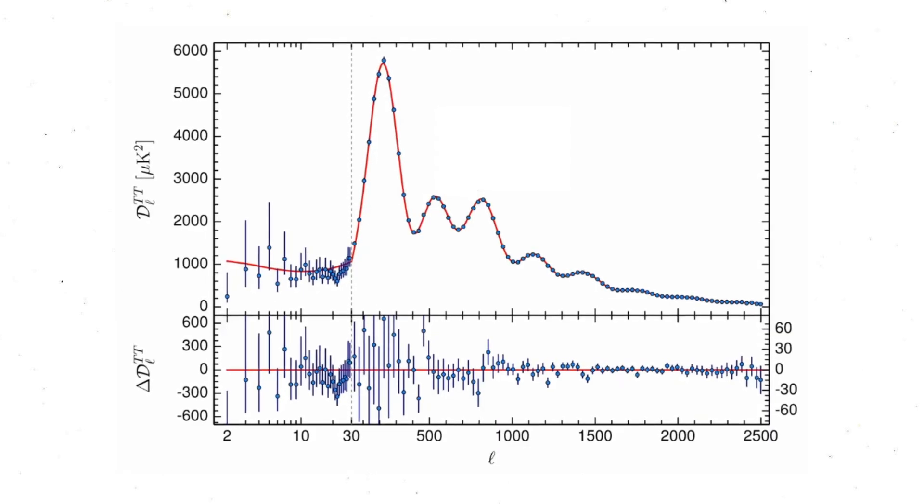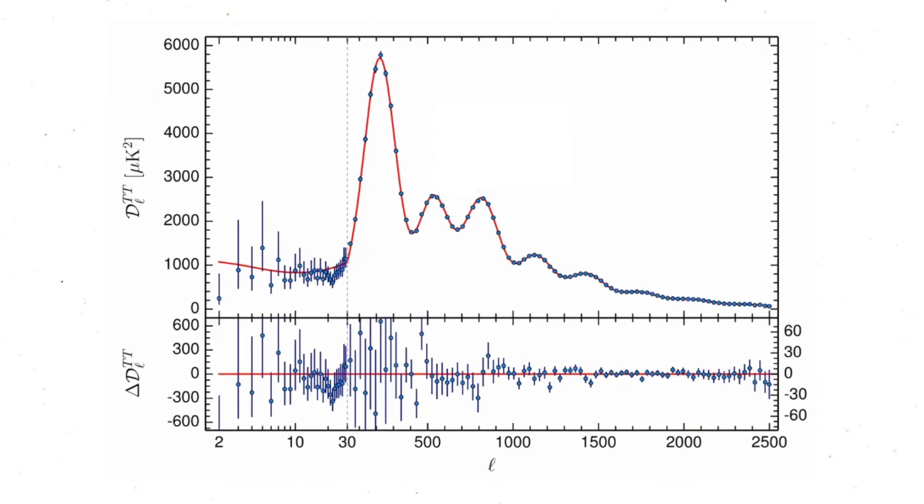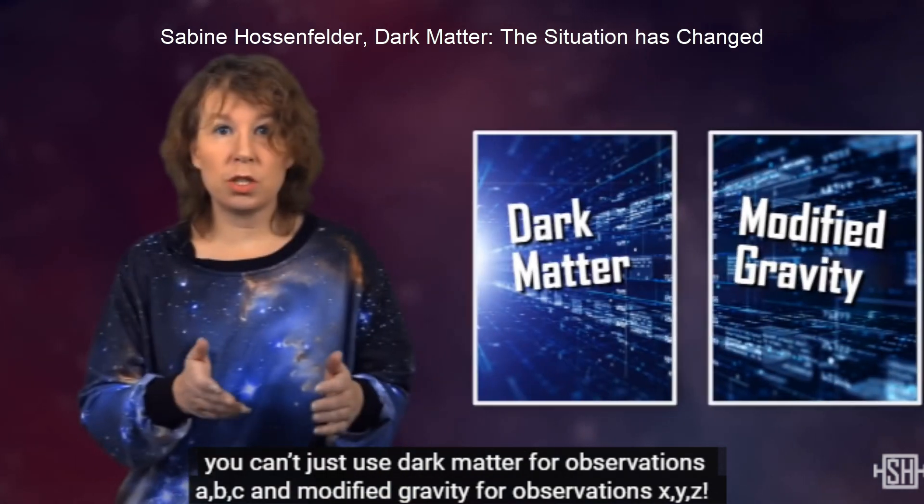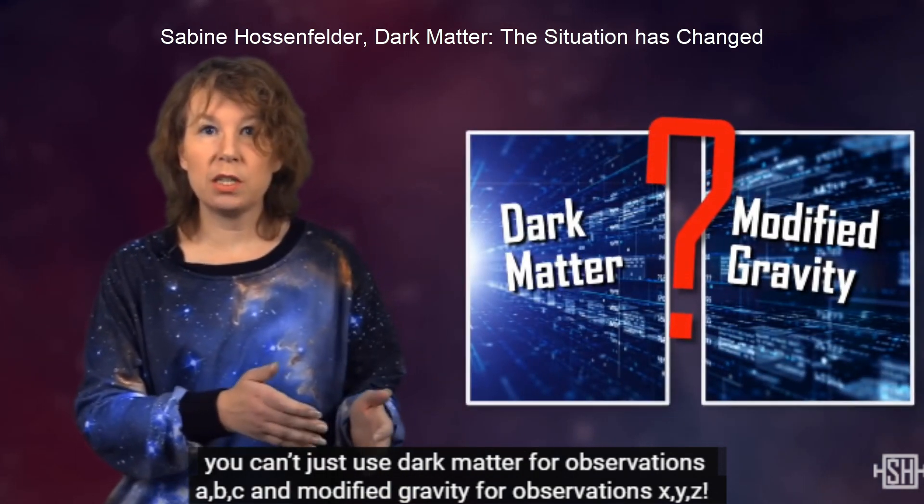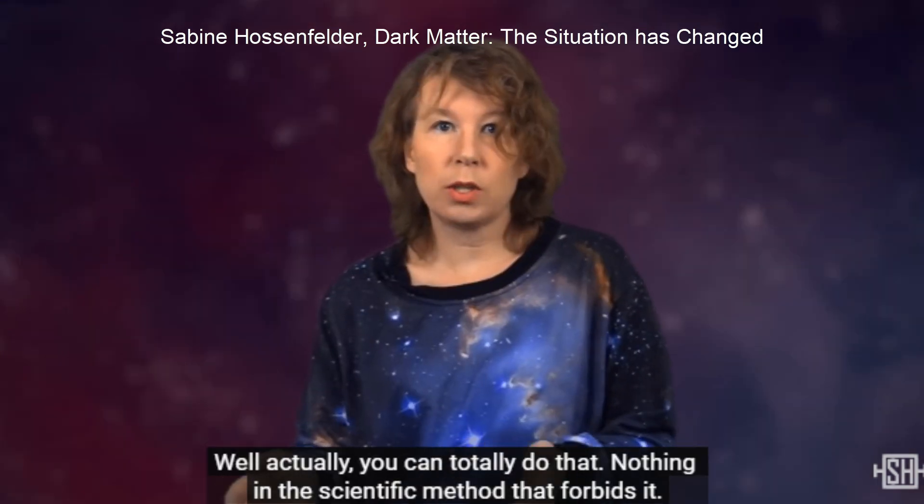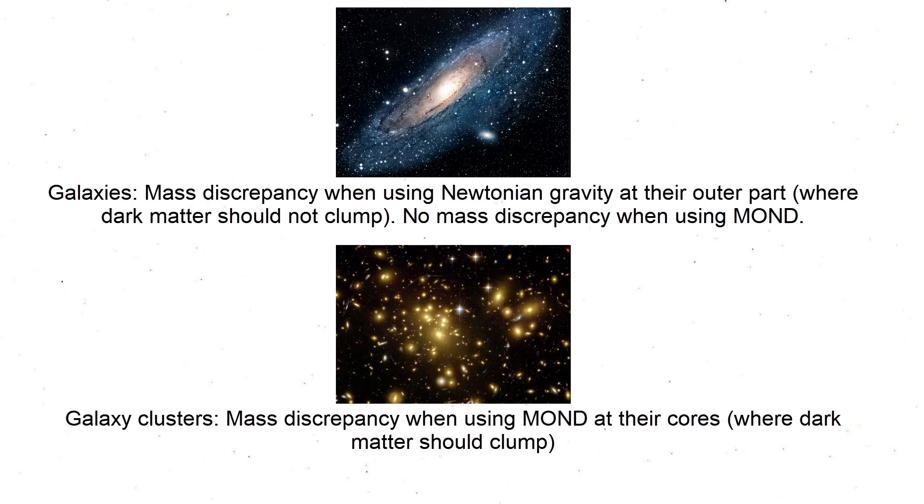This physical dark matter could explain the evidence for dark matter in the early universe from the CMB. While some may think that there is no point to using MOND to explain some dark matter observations and physical dark matter to explain other dark matter observations, not only could this be true, but it is more reasonable than to propose physical dark matter for the case of individual galaxies.